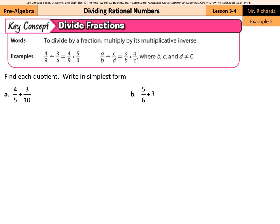We're going to use the multiplicative inverse in order to divide fractions. To divide by a fraction, multiply by its multiplicative inverse. So 4/9 times 3/5 is equal to 4/9 times 5/3. A lot of the times what you'll hear for this is keep, change, flip.